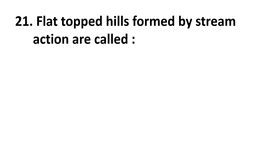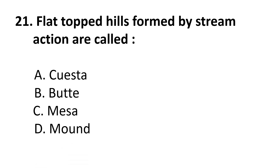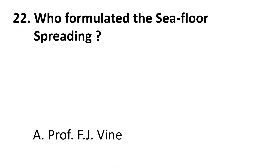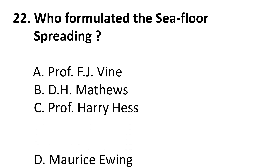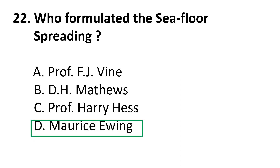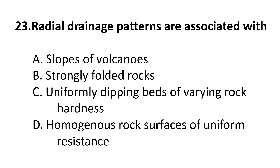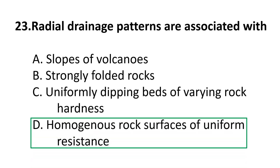Question 21: Flat-topped hills formed by stream action are called — choices are: A) Cuesta, B) Butte, C) Mesa, D) Mound. The correct answer is C) Mesa. Question 22: Who formulated the seafloor spreading theory? Choices: A) Professor F.J. Vine, B) D.H. Matthews, C) Professor Harry Hess, D) Morris Evinger. The correct answer is C) Professor Harry Hess. Question 23: Radial drainage patterns are associated with — choices are: A) Slopes of volcanoes, B) Strongly folded rocks, C) Uniformly dipping beds of varying rock hardness, D) Homogeneous rock surfaces of uniform resistance. The correct answer is D) Homogeneous rock surfaces of uniform resistance.